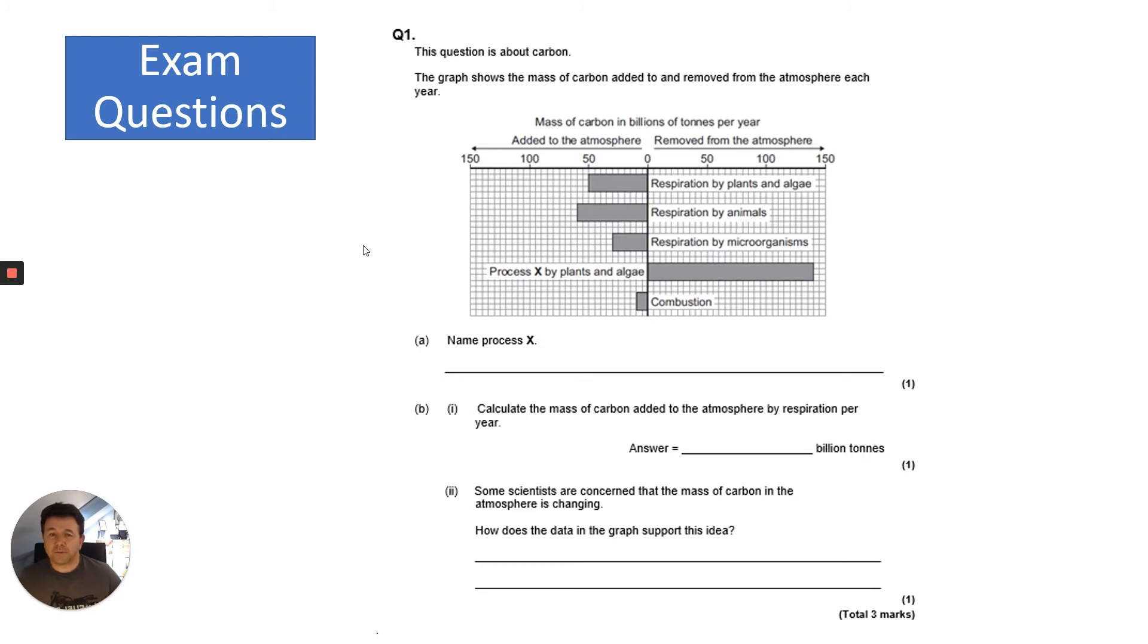Let's go through some of the answers. This question is about carbon. The graph shows the mass of carbon added to and removed from the atmosphere each year in billions of tons per year. On the left is added to the atmosphere, on the right is removed. It asks you to name process X. Process X by plants and algae - that would be photosynthesis. The reason it's photosynthesis is because carbon dioxide is removed from the atmosphere by photosynthesis. Also looking at the diagram, it's the only missing process there.